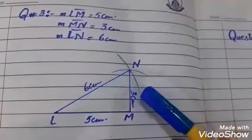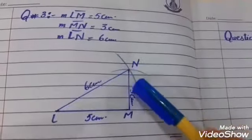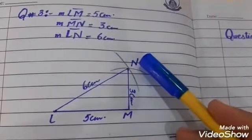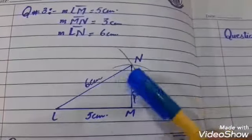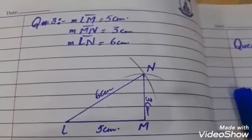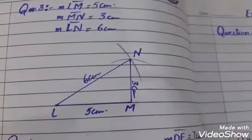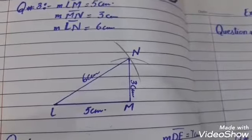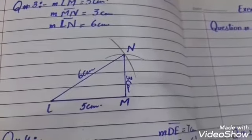From point L, open the compass to 6 cm and draw the arc. The two arcs intersect at point N. Connect N to L and M to complete the scalene triangle. You can practice this at home. God bless you, Allah hafiz.